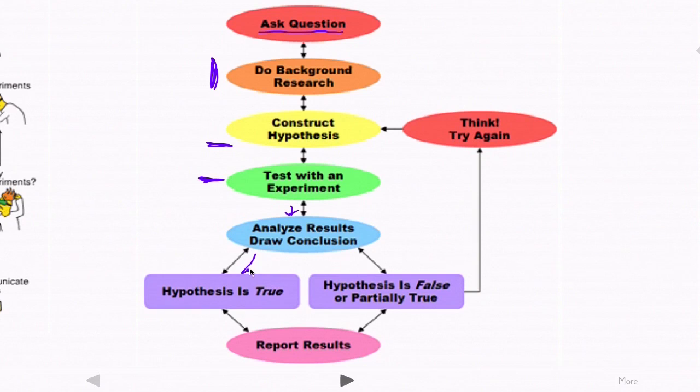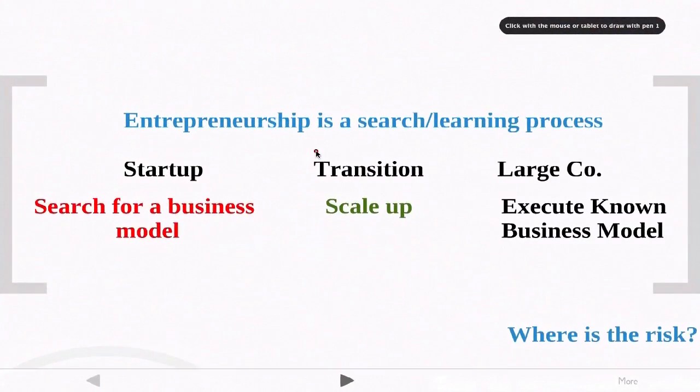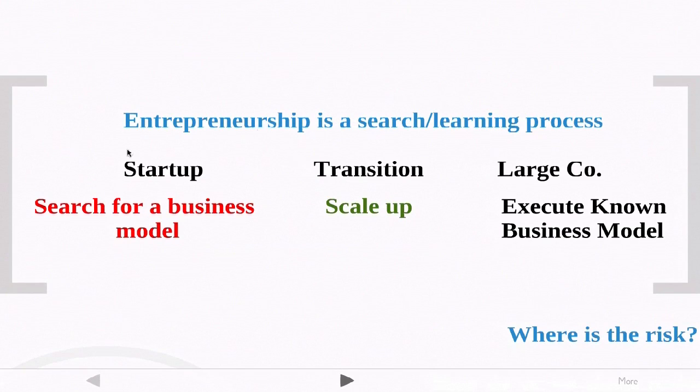So again, this conclusion might either be true or the conclusion might be false or partially true. And in that case, we're going to have to go back to the drawing board, think again, modify the hypothesis in some way, or come up with a new hypothesis and design a new experiment. And so this is the scientific methodology. This is the scientific process that we want to then take in an analogous form to entrepreneurship.